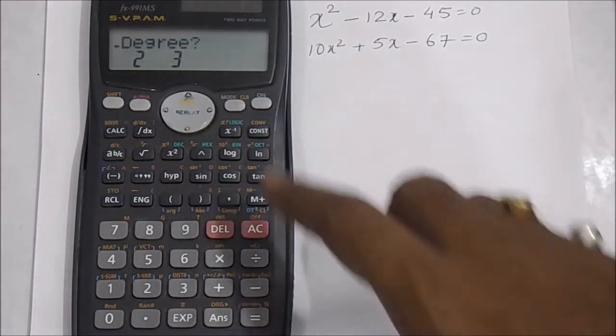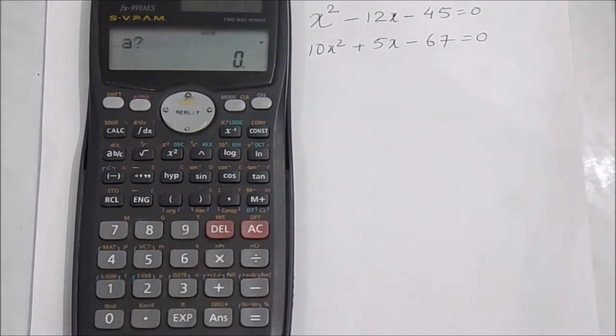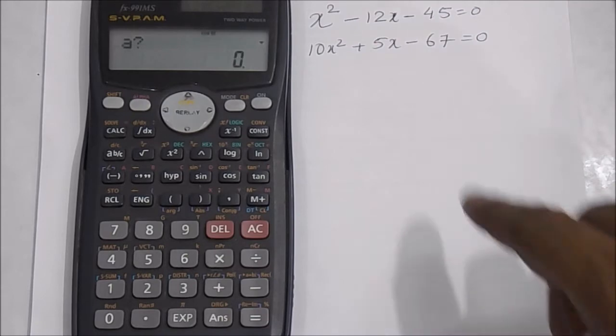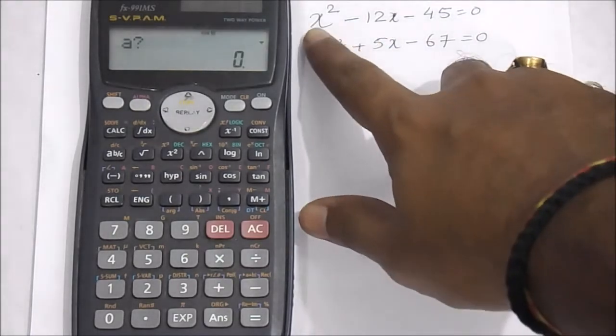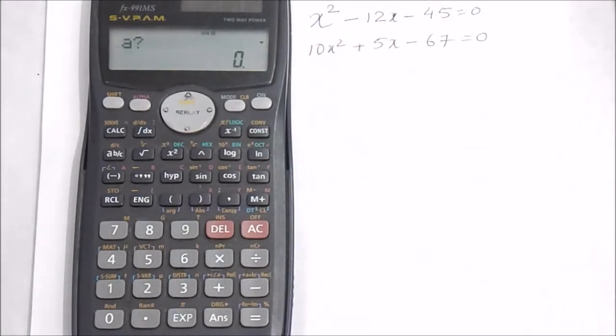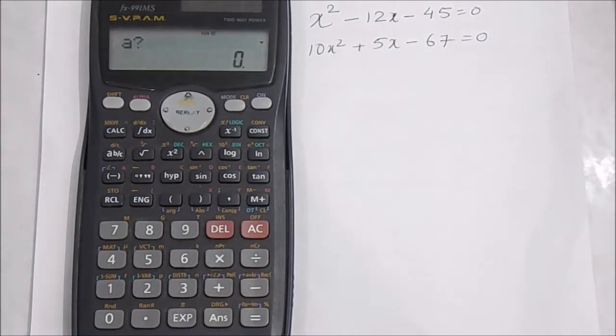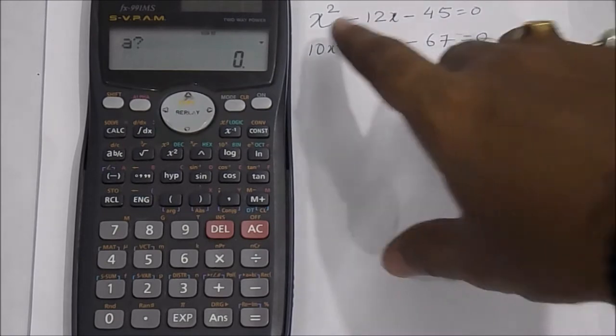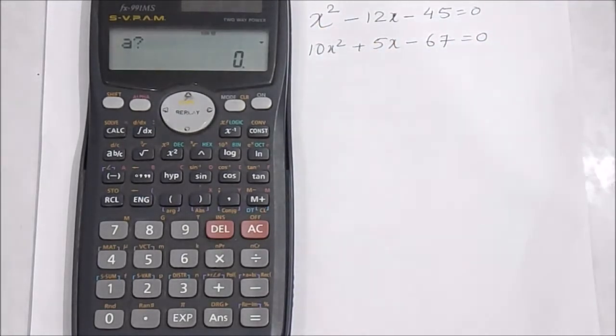Now you'll get option 'a', which is the coefficient of x². For example, to calculate the equation x² - 12x - 45 = 0, the coefficient of x² is 1.